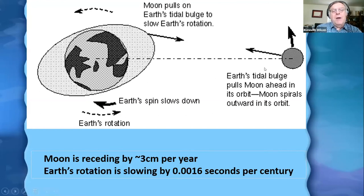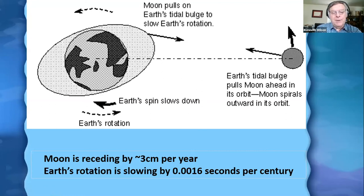Because of another principle of science called the conservation of angular momentum, as the Earth's rotation slows down, it makes the Moon slowly move farther away from us. So every year, the Moon moves about three centimeters farther away because of the tides.